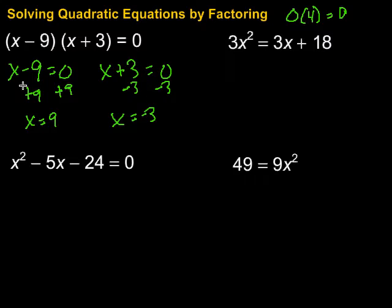Let's just check those quick and see what happens. If we put 9 back in here for x, we're going to get 9 minus 9, which is zero. Then we have 9 plus 3, which would be 12. So zero times 12 is zero. That's one solution. Our second solution is negative 3. If I put that in, I have negative 3 minus 9 would be negative 12, then negative 3 plus 3 would be zero. Negative 12 times zero is also zero. So there's our solutions.